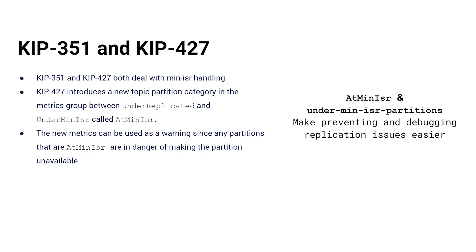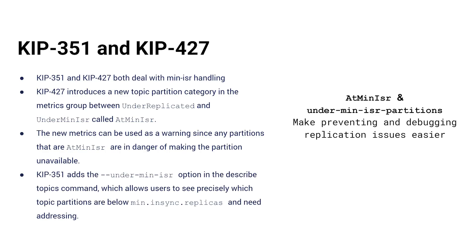Let's get started with KIPs 351 and 427. These have to do with under-replicated partitions. Historically, you've got the under-min-ISR metrics group and the under-replicated metrics groups, and those are telling you which partitions don't have enough follower partitions replicating — they're broken in some sense. You're not going to be able to do a produce with acks equals all to one of those partitions. But what about when we're on the threshold of something going wrong? KIP 427 adds a group called at-min-ISR. If you're at-min-ISR, you can still produce with acks equals all, but if another one falls behind in replication, then you won't be able to anymore. KIP 351 adds a switch called under-min-ISR to the describe topics command, letting you see which topic partitions are below the min in-sync replicas and need addressing.